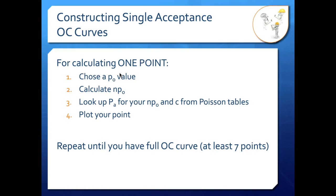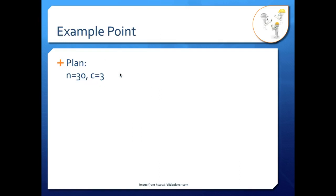So let's do an example point. Remember from our plan, we have a sample size of 30, acceptance criteria of 3. I'm going to select a P0 value of 1% or 0.01. So if I multiply my sample size, which is 30, times my fraction non-conforming in my population or 0.01, I get an NP0 value of 0.3.